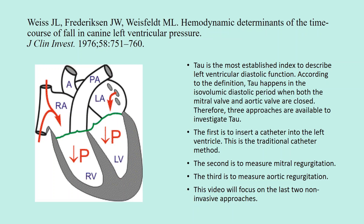The first approach is to insert a catheter into the left ventricle — this is the traditional catheter method. The second is to measure mitral regurgitation. The third is to measure aortic regurgitation. This video will focus on the last two non-invasive approaches.